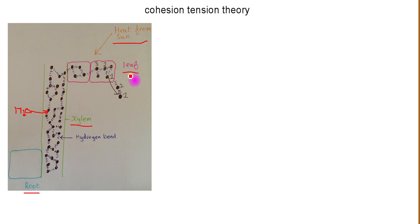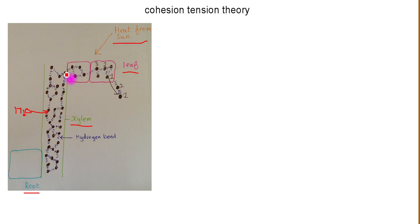The water within the xylem forms a continuous, generally unbroken column of water, with all the water molecules joined together by cohesive forces. That column of water is continuous with the cells within the leaf — all the water molecules in the leaf are joined to the water molecules in the xylem. So we've got this continuous column running from the leaf all the way down the xylem, with all water molecules joined by cohesive forces.